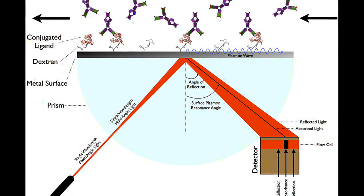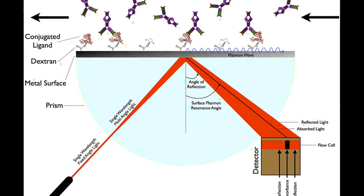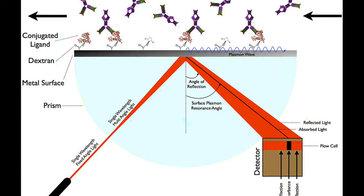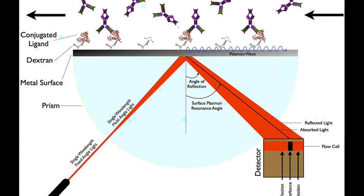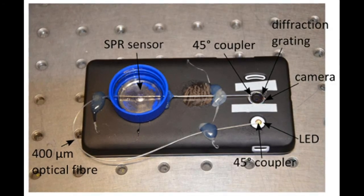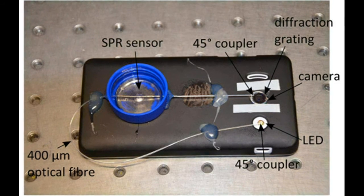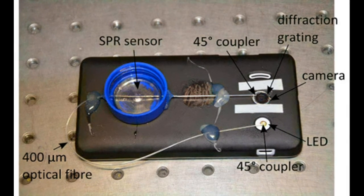Surface plasmon resonance is a phenomenon commonly used for biosensing, but typically requires bulky lab equipment, involving both a light detector and light source. Fortunately, smartphones already have both of these.